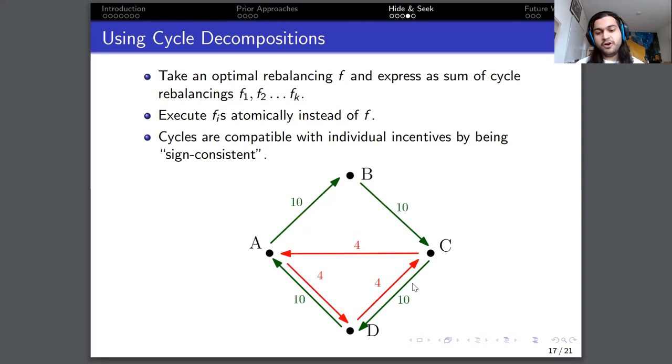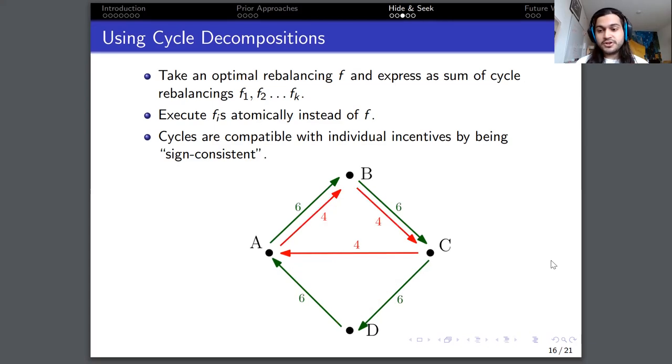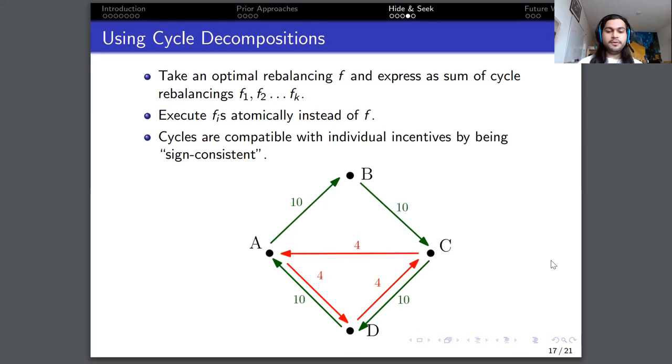Compare this with the following rebalancing. So first, I would like to comment, this is the exact same rebalancing as the previous one. It's just that the cycle decomposition is different. And we decompose it into these two cycles, but this is a sign inconsistent cycle decomposition. Why? Consider for example, the edge from C to D. The green edge requires flow from C to D, whereas the red cycle requires flow from D to C. So they are going in opposite directions and they are sign inconsistent.